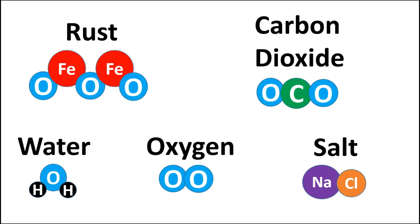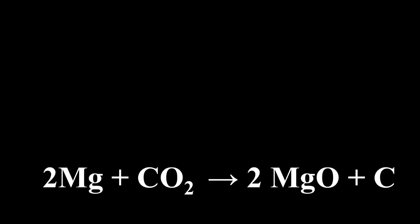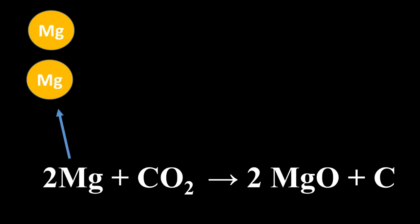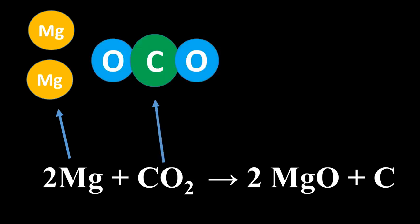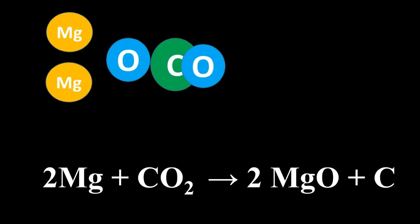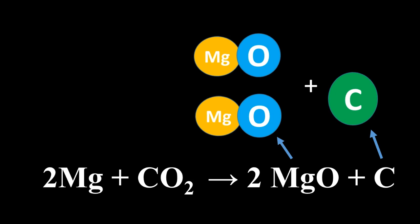Let's look at an example. In this chemical reaction, we have magnesium atoms being rearranged with a molecule of carbon dioxide, and those atoms now make a chemical called magnesium oxide plus carbon.